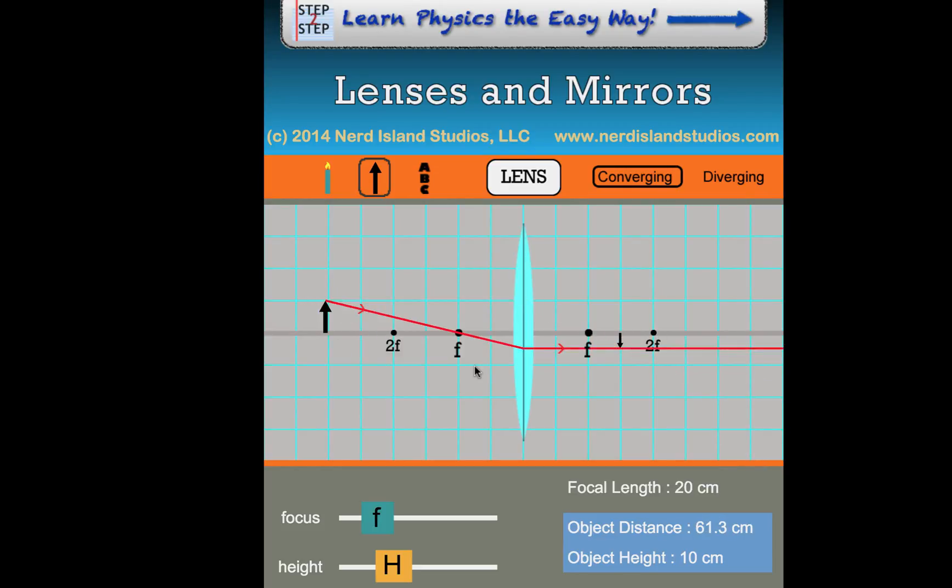Ray number 2. Ray number 2 goes through the focal point until it hits the center of the lens. When it comes out on the other side, it is parallel to the principal axis. And again, if I move this back and forth, you'll notice that that ray is always doing that.